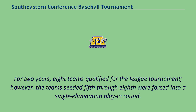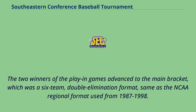For two years, eight teams qualified for the league tournament; however, the teams seeded fifth through eighth were forced into a single elimination play-in round. The two winners of the play-in games advanced to the main bracket, which was a six-team double elimination format, same as the NCAA regional format used from 1987 to 1998.